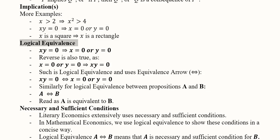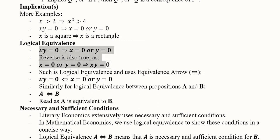Logical equivalence is a step ahead of implication. It has a bicausal phenomenon: if the product of x and y is 0, then either or both are 0. But in logical equivalence, the reverse is also true — if either x or y is 0, the product will also equal 0. When this reverse causality exists, we call it logical equivalence. It is a kind of dual implication — from left to right and from right to left.